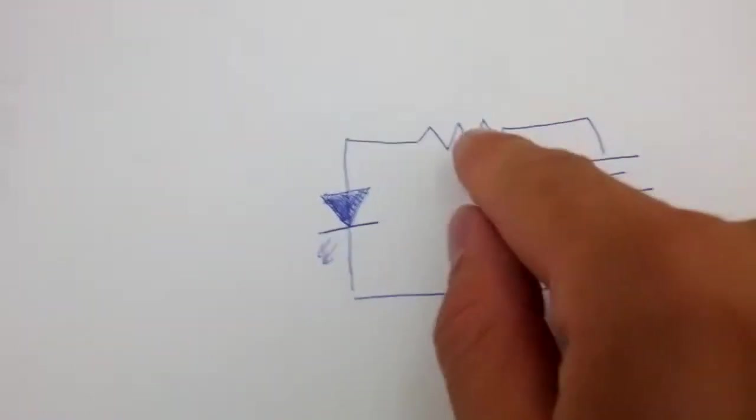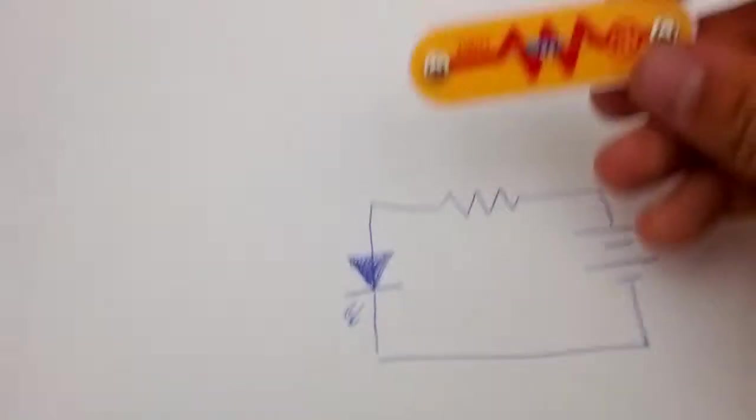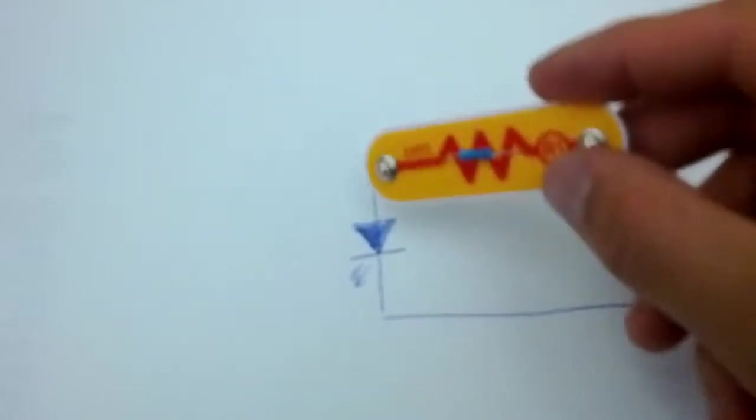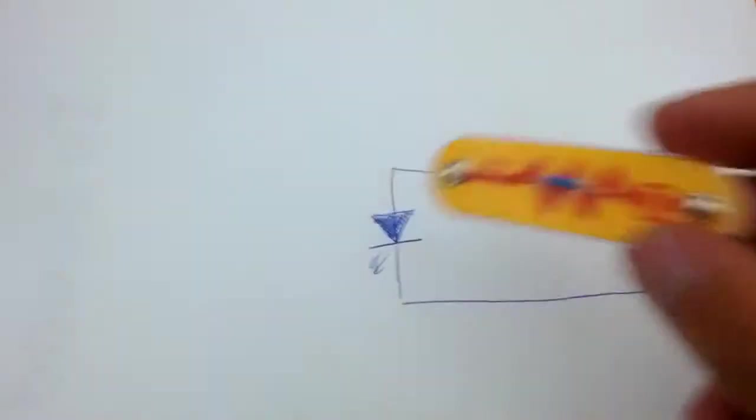So the current will go through this thing we call a resistor, which slows it down so that when it goes through the LED, it won't kill the LED.